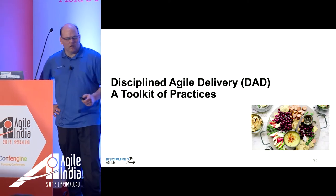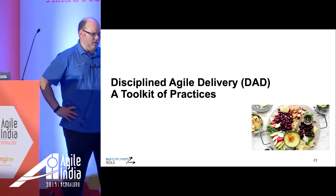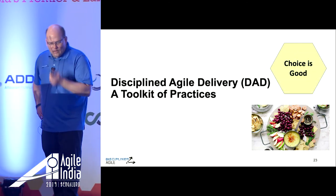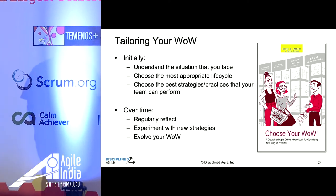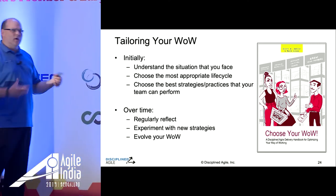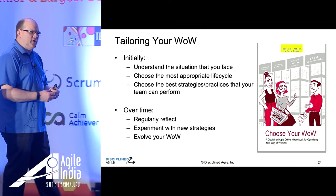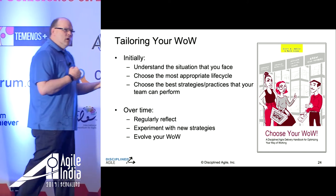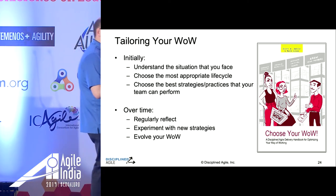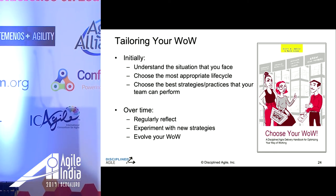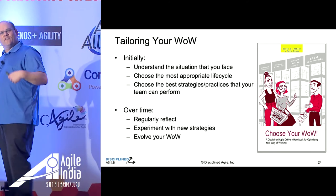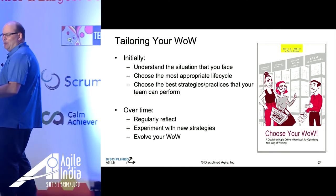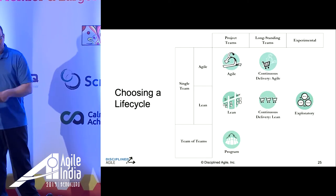So how does this all play out? I've been talking about a toolkit — what does it look like? How do we provide choice? First, you want to figure out what situation you're in and initially tailor your approach to meet the reality of your team. A large team organizes itself differently than a small team. Then over time we want to reflect, improve, identify a tension, try to improve on it, and solve the problem.